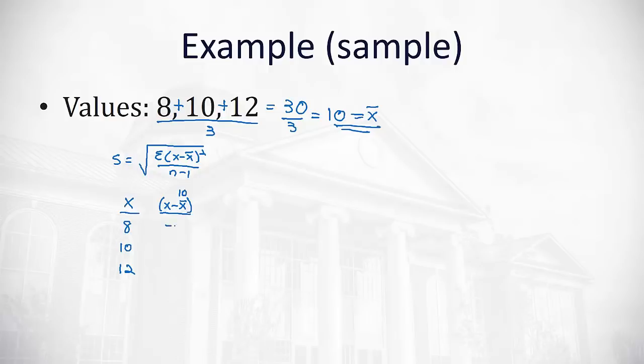So 8 minus 10 gives us negative 2. 10 minus 10 is 0. And 12 minus 10 is 2. Following the formula, the next thing we need to do is square all those data values. Find what x minus x bar squared is.